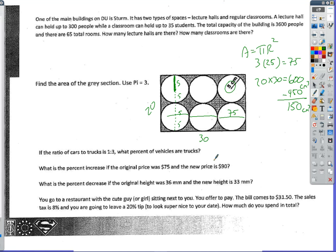If the ratio of cars to trucks is 1 to 3, what percent of the vehicles are trucks? All right, so ratios are order specific, cars to trucks. So this has to be cars, and this has to be trucks. If I have one car and three trucks, that is a total of four vehicles. So that means I have three trucks out of four total vehicles, and that is 75%.